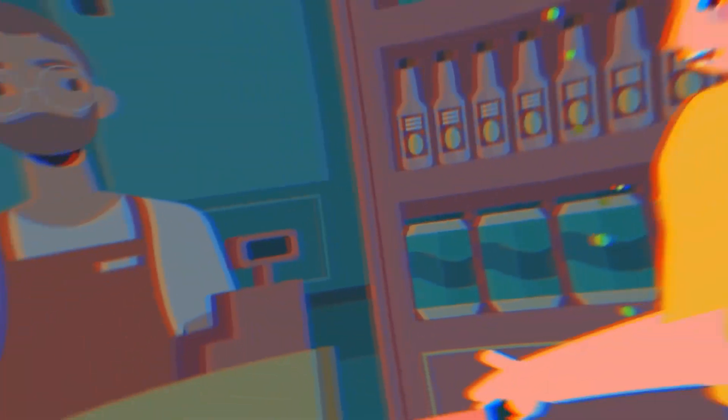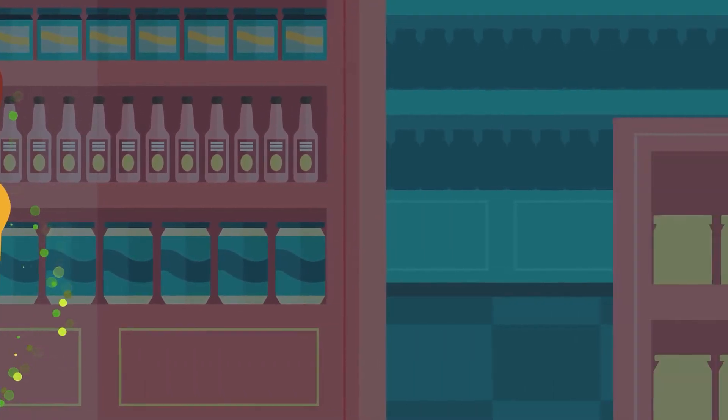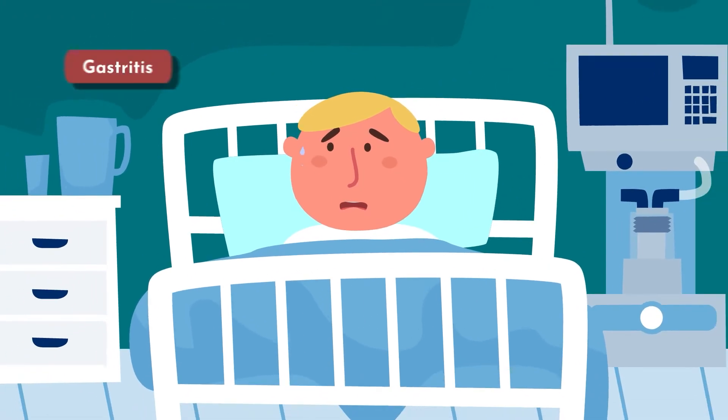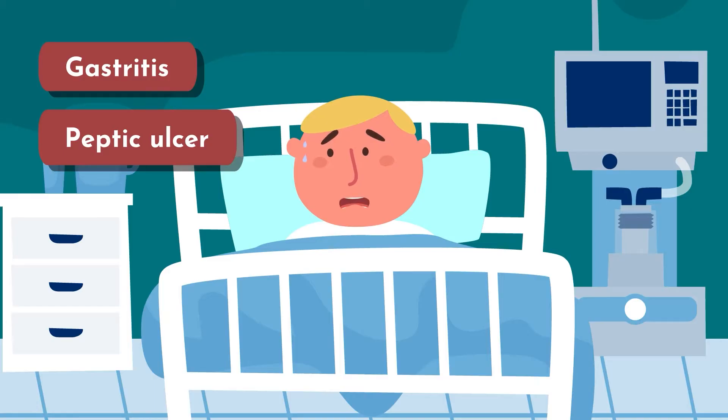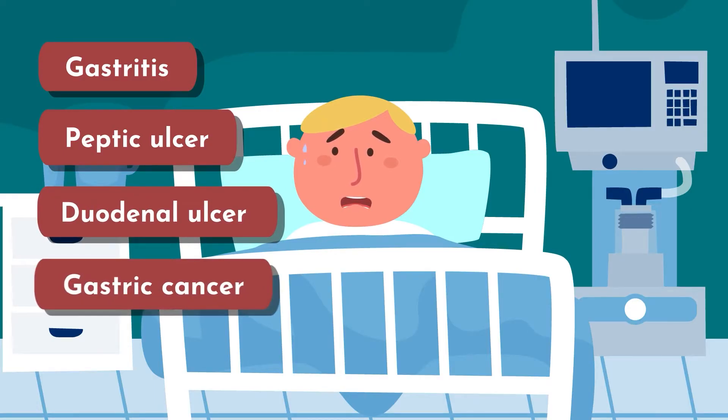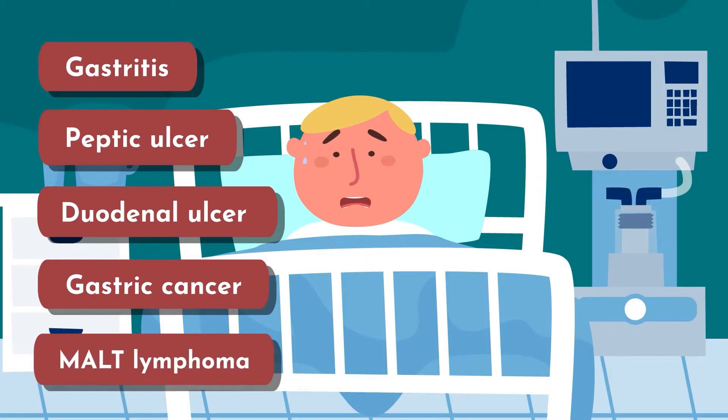While many carriers of H. pylori remain asymptomatic, others can develop inflammation and diseases like gastritis, peptic ulcer disease, duodenal ulcer disease, even cancers like gastric cancer, and malt lymphoma.